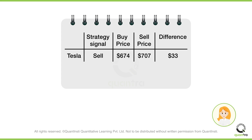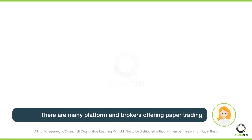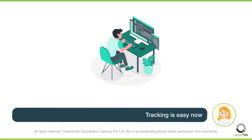Before digitization, traders used this method, and that is why it is called paper trading. Today, you have various trading platforms and brokers that offer paper trading of your strategies. You can track your trades and see the profit and loss in real time without having to monitor the markets.